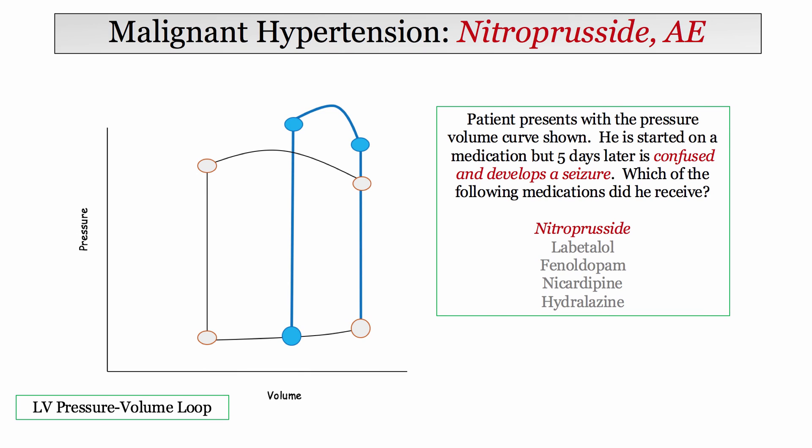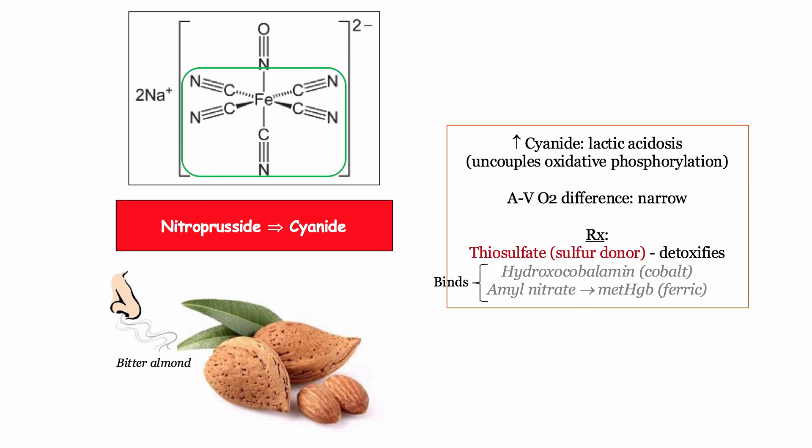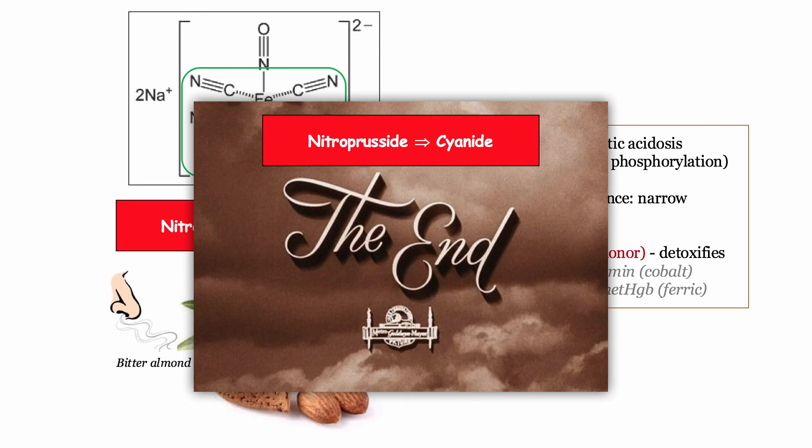The last nitroprusside derivative relates to toxicity. A patient treated with nitroprusside for a hypertensive emergency presents five days later confused with a seizure — only nitroprusside demonstrates this adverse effect: cyanide toxicity. The rest of the molecule is laden with cyanide side chains. Symptoms include psychosis, seizure, and lactic acidosis, the latter deriving from uncoupling of oxidative phosphorylation. When you uncouple oxidative phosphorylation and consume less oxygen, the venous AVO2 difference narrows. Treatment — thiosulfate is most important.